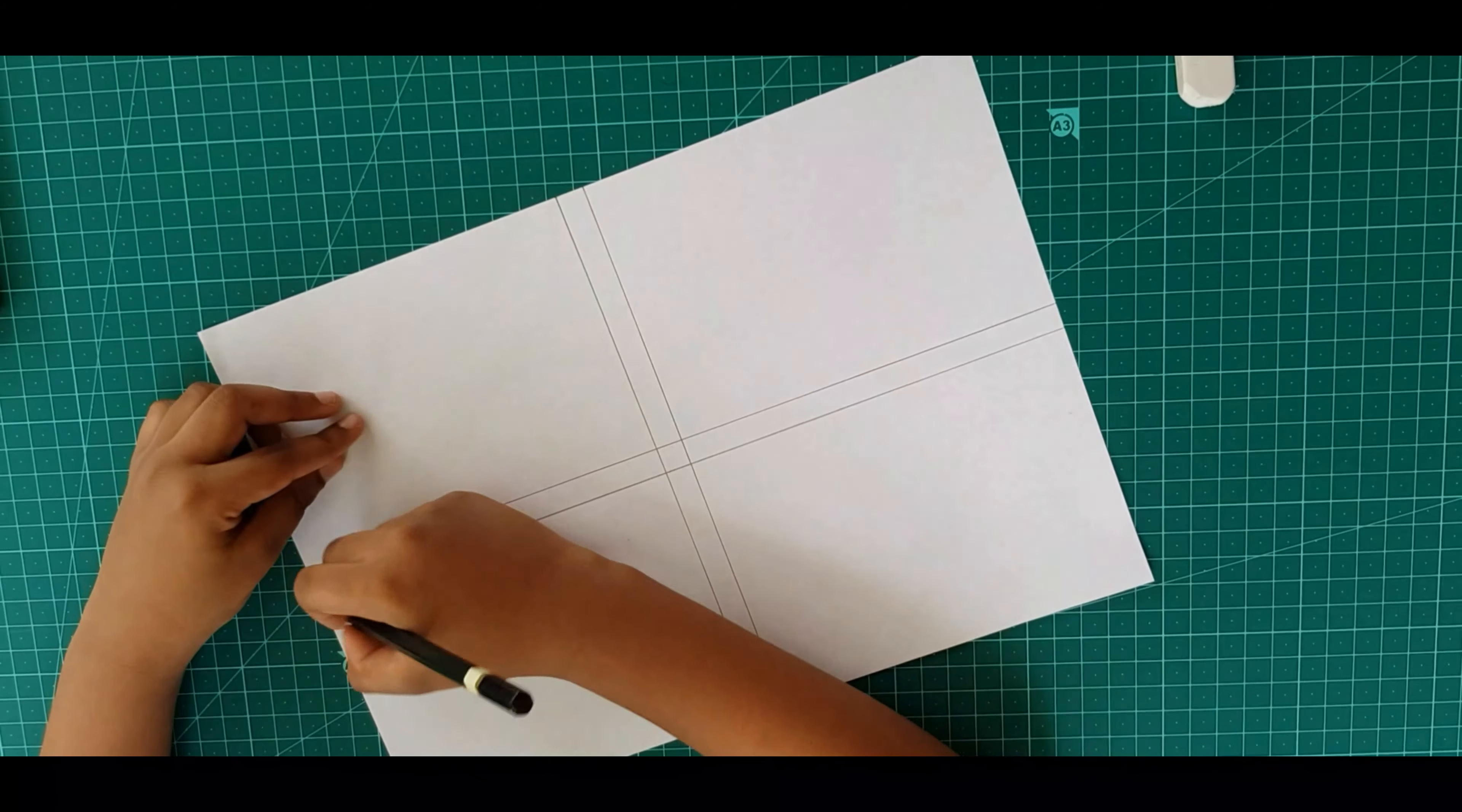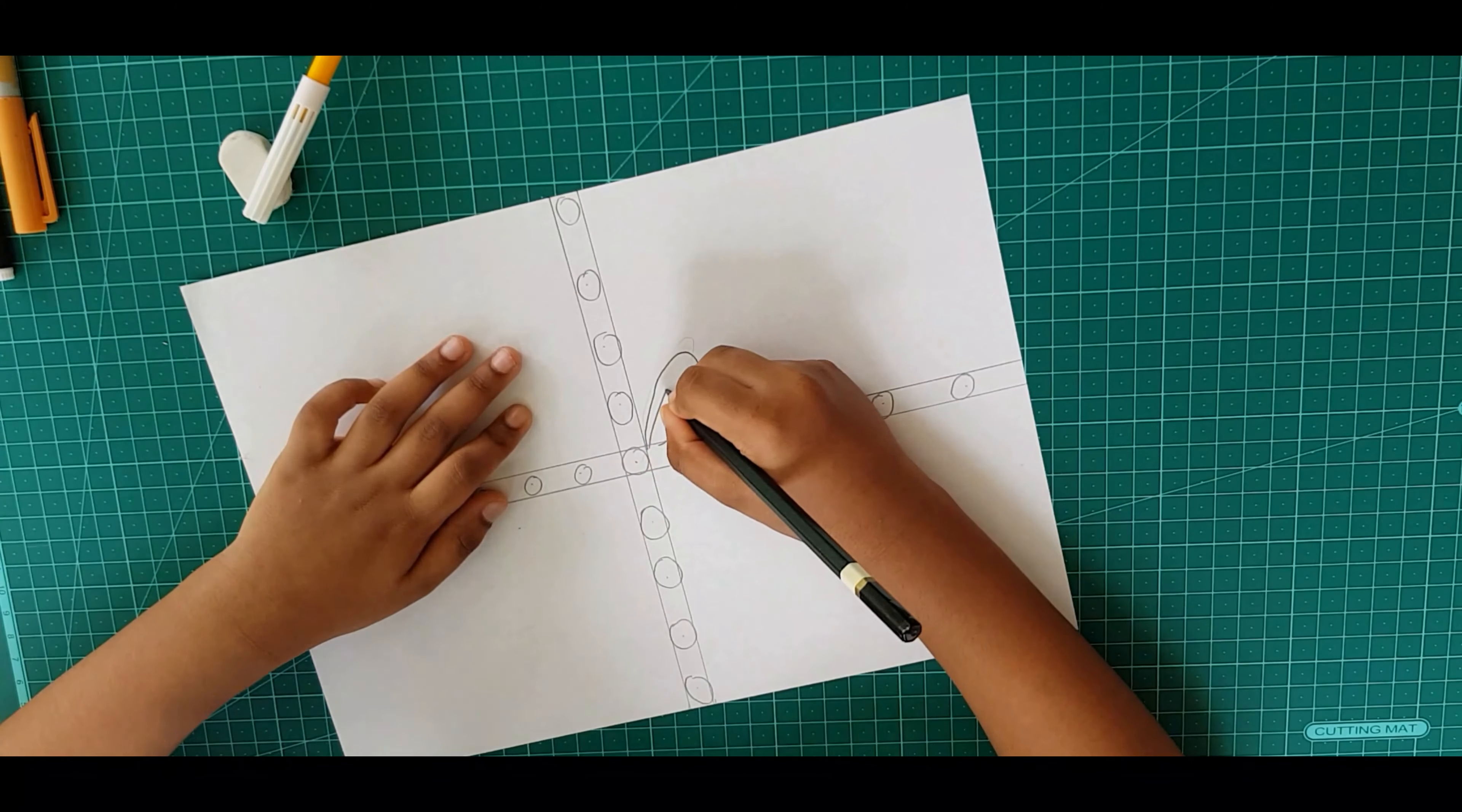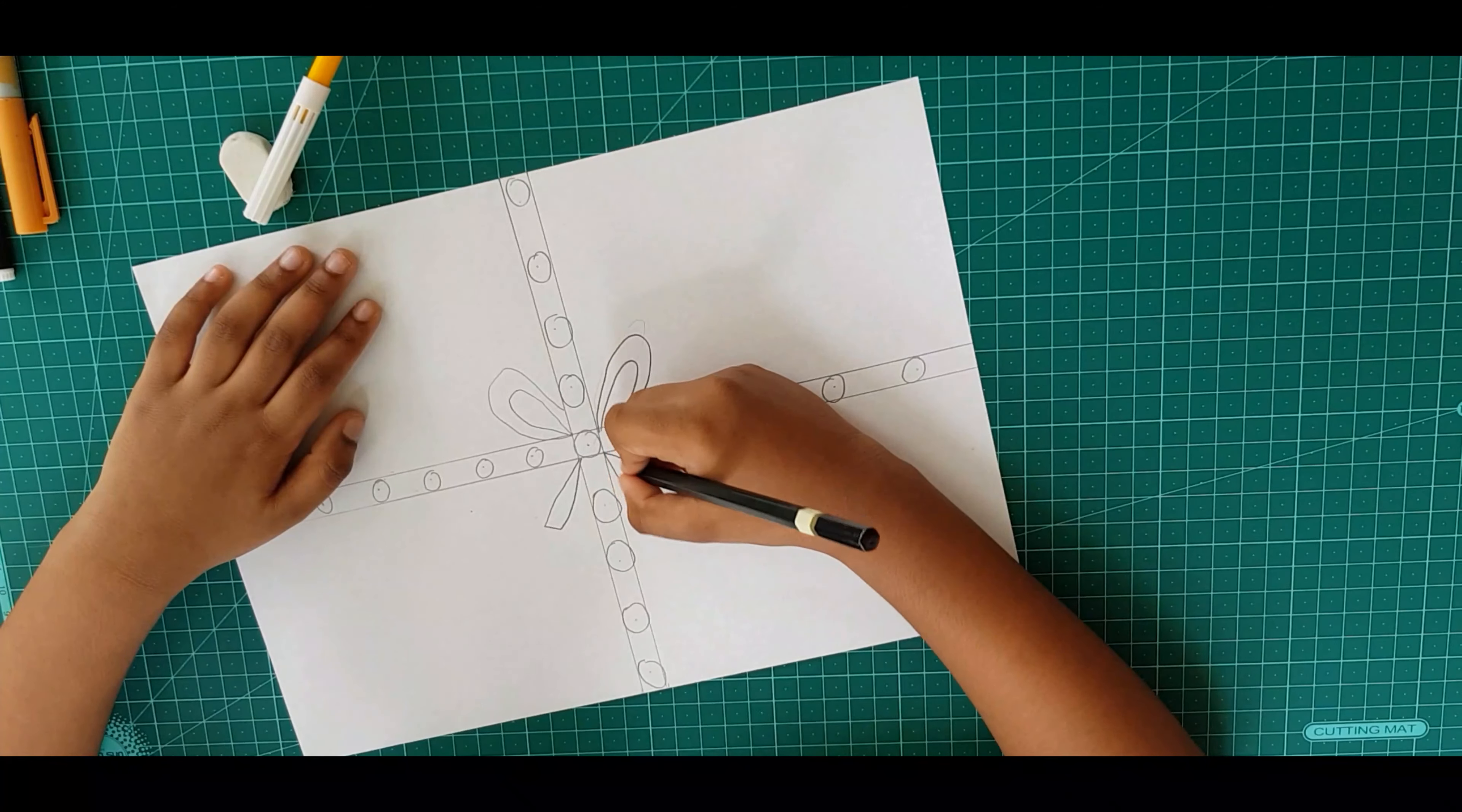Now we have to draw some circles. Now we have to draw two shapes like this, a small one and a big one. Again, a small one and a big one. And here you have to make triangles. You don't need to draw small and big.